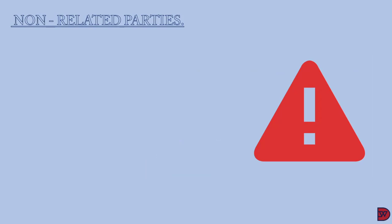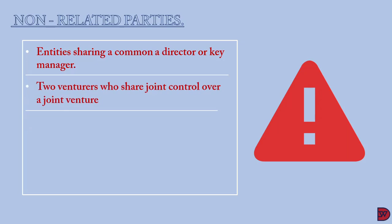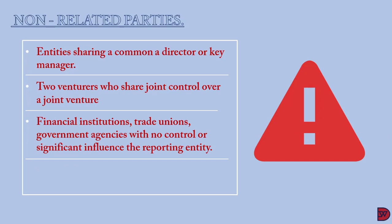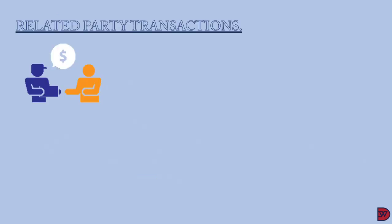There are situations which do not automatically make entities related parties. First, when both entities merely share a director or key manager — only when that person becomes key management personnel with power to influence operations and decision-making does it count. Second, when two ventures share joint control over a joint venture. Third, financial institutions, trade unions, and government agencies who do not have control over the entity. Lastly, customers, suppliers, distributors, and agents — just because there is significant volume of transactions between them does not make them related parties; there must be a relationship that might cause some undue advantage.